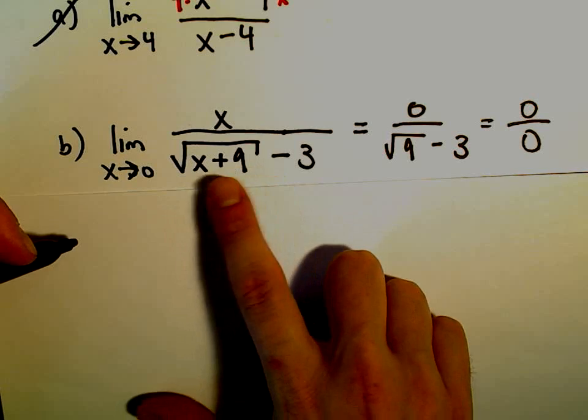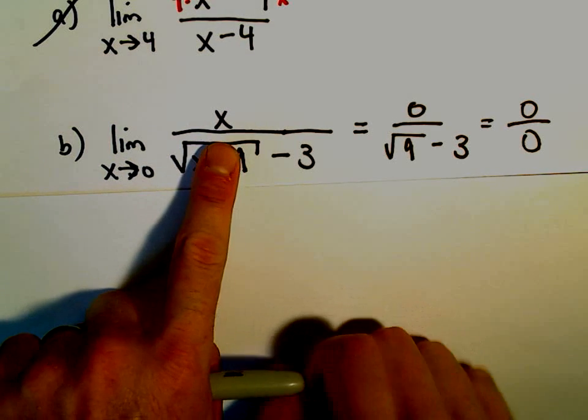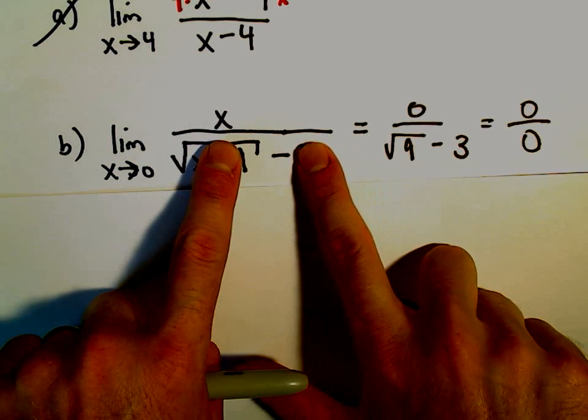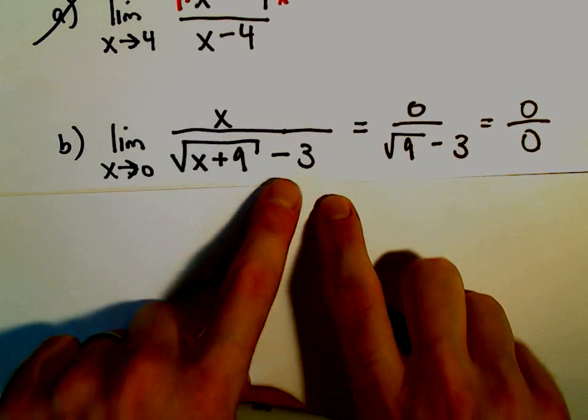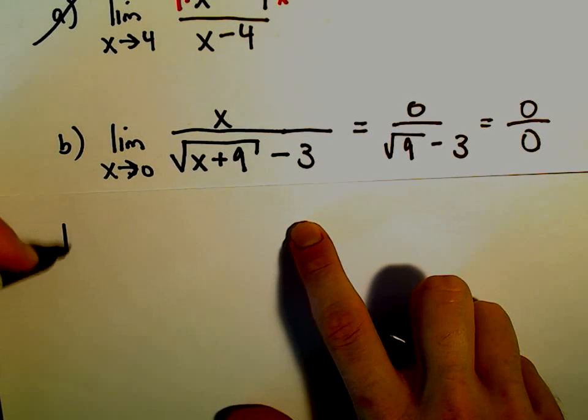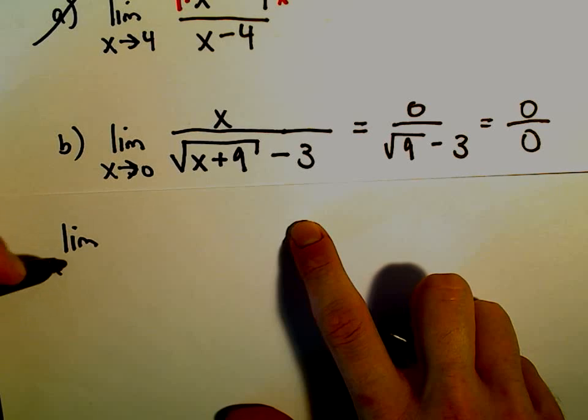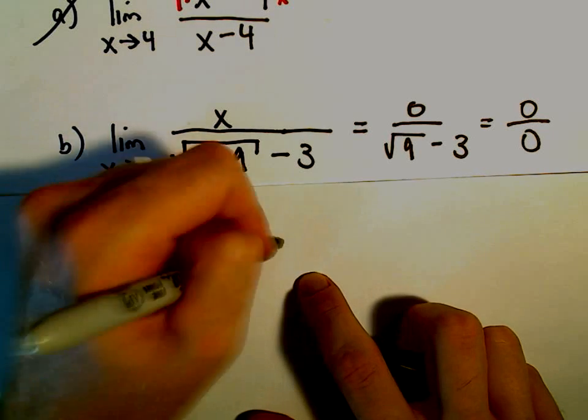So a common trick is when you have a square root and you have two terms, the square root is one term, then the 3 is the other term. They're being subtracted. What we do is multiply by what's called the conjugate.